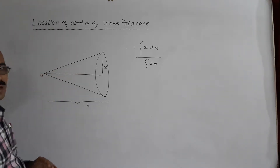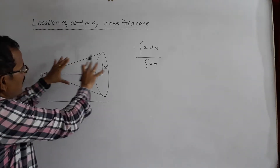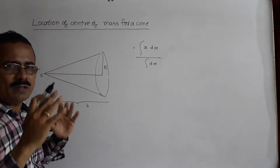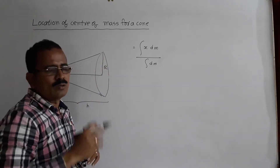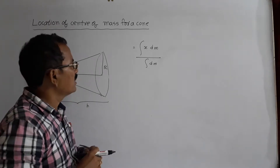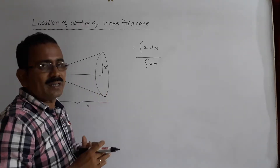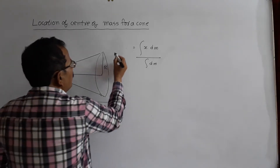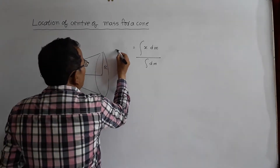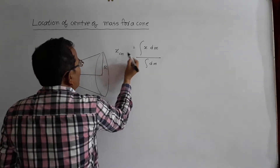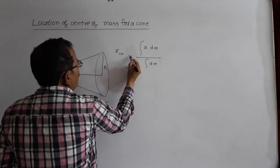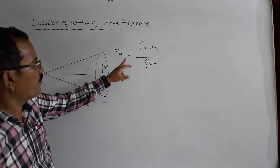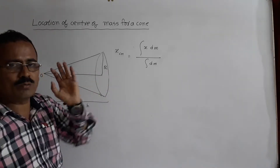A cone is an example of continuous distribution of mass. For continuous distribution of masses, to locate the center of mass, the method is the method of integration, where the position of center of mass Hcm is equal to the integral of x·dm divided by the integral of dm. This is the formula we have to use.